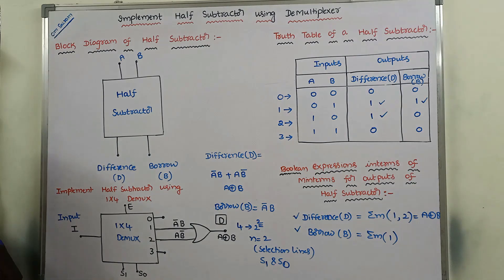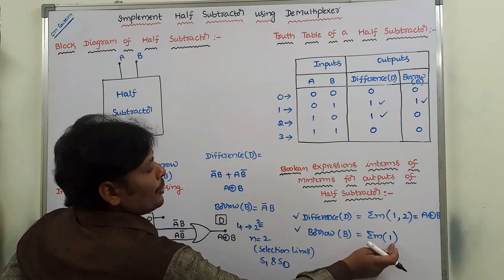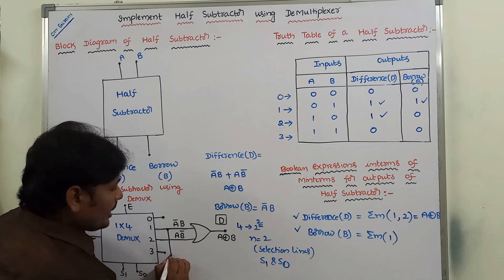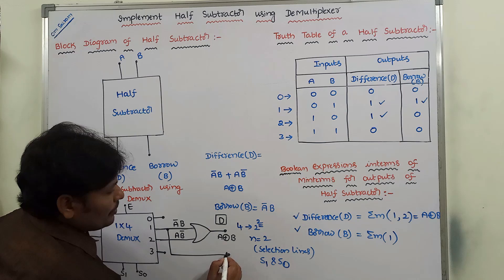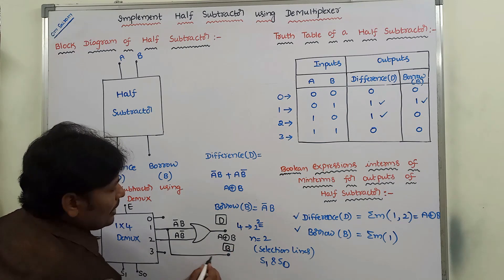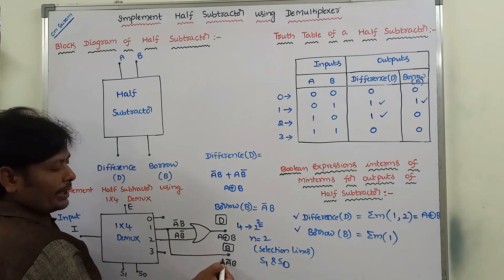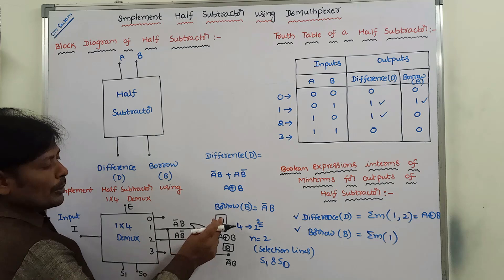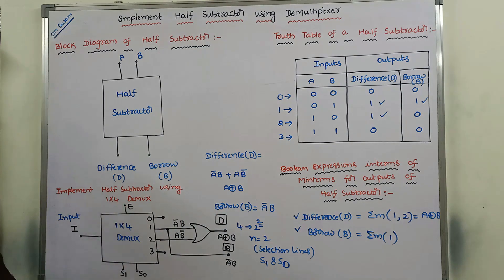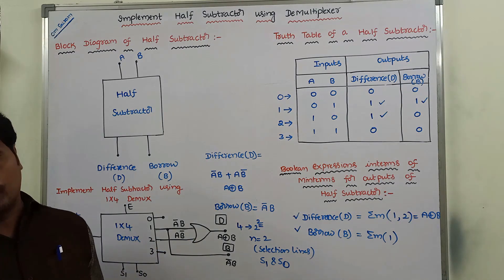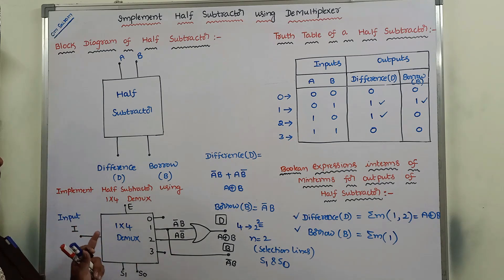The borrow output can be obtained by using only output Y1 alone. The value of output Y1 is A-bar·B. By using only output 1 we get the borrow output, and by using outputs 1 and 2 we get the difference output. By using a 1-to-4 demultiplexer, we obtain both outputs of the half subtractor.